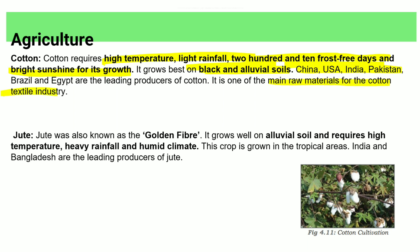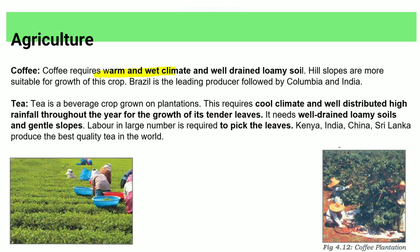Jute is known as the golden fibre. It requires alluvial soil, high temperature, high rainfall, and humidity. India and Bangladesh are leading producers. Coffee requires a warm and wet climate with well-drained hilly soil on hill slopes. Brazil is the leading producer, followed by Colombia. Tea requires a cool climate with well-distributed high rainfall, well-drained hilly soil, and newly grown leaves.